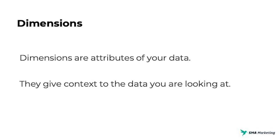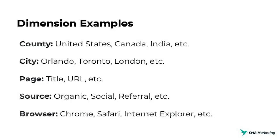First, let's talk about dimensions. Dimensions are attributes of your data — they describe your data in a little bit more detail and allow you to segment it. Examples of dimensions would be something like a country: United States, Canada, India. It could be a city: Orlando, San Francisco, London. It could also be a page — the actual URL or the page title. As you can see, these aren't actually numbers. They're not able to be quantified. These are attributes that can describe or break up your data a little bit deeper.